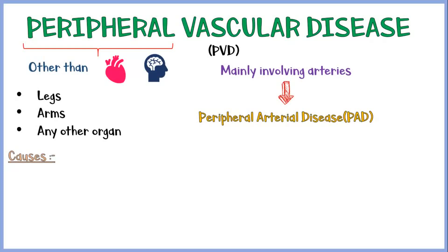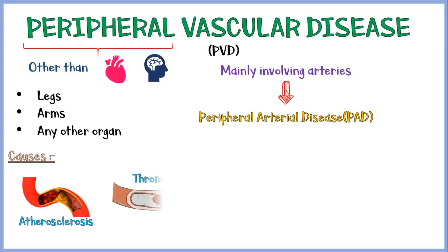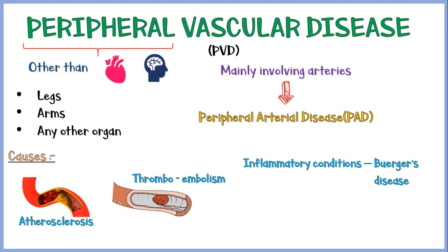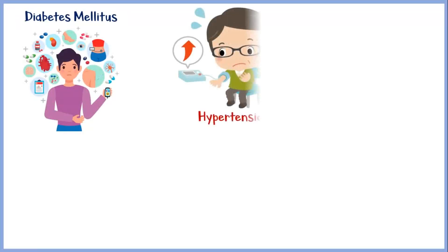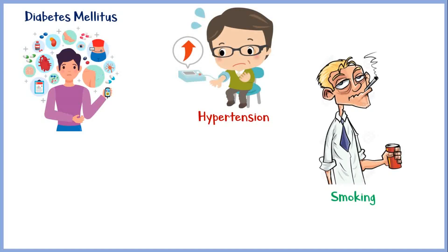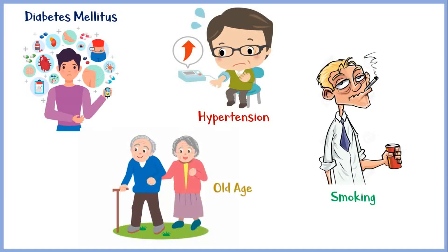The major cause of peripheral vascular disease is atherosclerosis. Other causes include thromboembolism, inflammatory conditions like Buerger's disease, and functional conditions like Raynaud's phenomenon. In addition, diabetes mellitus, hypertension, smoking, and old age may be risk factors for the development of PVD.